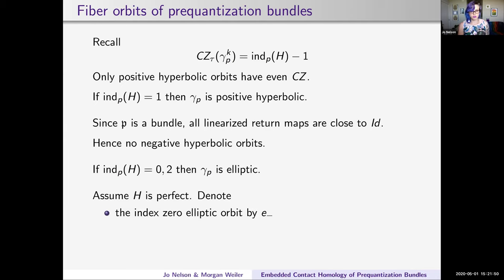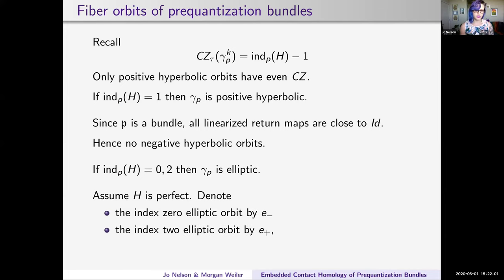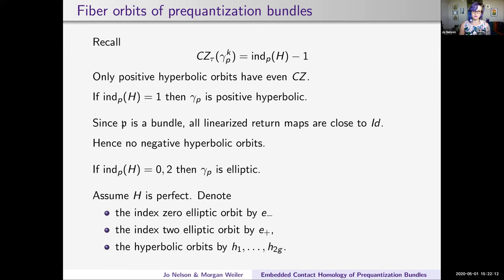If we have a perfect Morse function—one that picks up exactly the right amount of information for the chain complex—we'll denote the index zero elliptic orbit by E minus, and the index two elliptic orbit by E plus, where E stands for elliptic. Depending on the genus of our base, we'll end up having 2G index one critical points, which give positive hyperbolic orbits, denoted H₁ through H_{2G}. Now Morgan is going to tell us about embedded contact homology.